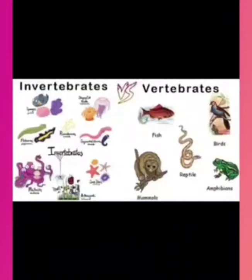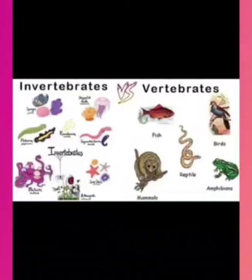Now we talk about mammals. These animals are the highest evolved land animals. They have hair on their body. They give birth to young ones. Common mammals are horse, cat, humans, etc.